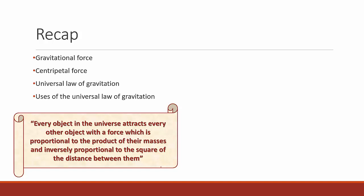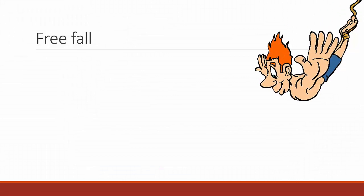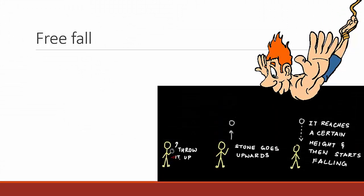In this part of the chapter, let's first talk about freefall. Let's take a simple example of a stone. We throw the stone up — it reaches a certain height and then falls back to earth. We have learned previously that earth attracts objects towards itself due to gravitational force, so the stone also comes back to earth because of gravitational force.